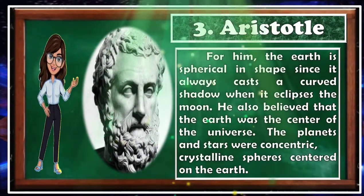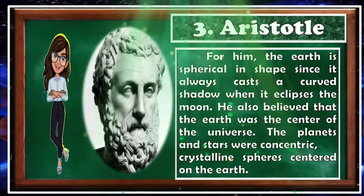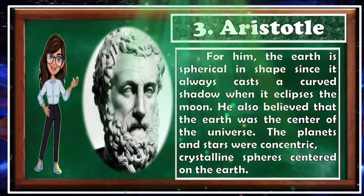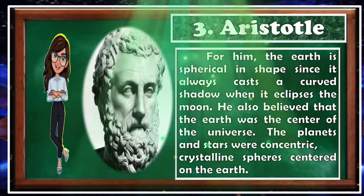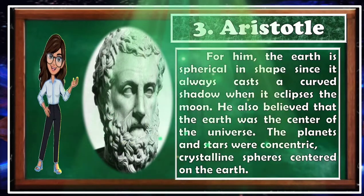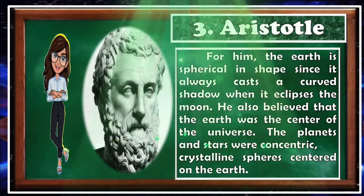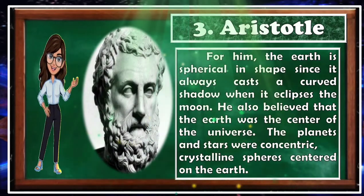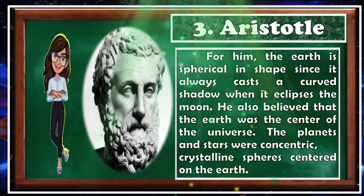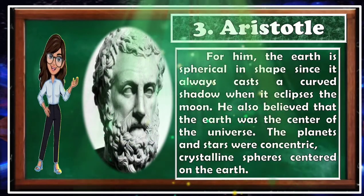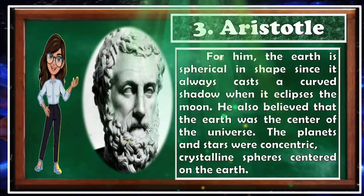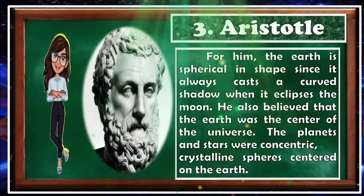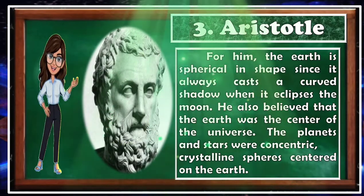Next is Aristotle. For him, the Earth is spherical in shape, since it always casts a curved shadow when it eclipses the moon. He also believed that the Earth was the center of the universe, and that the planets and stars were on concentric crystalline spheres centered on the Earth.